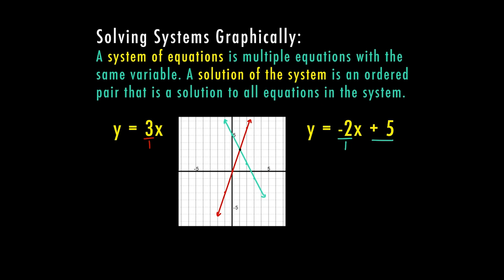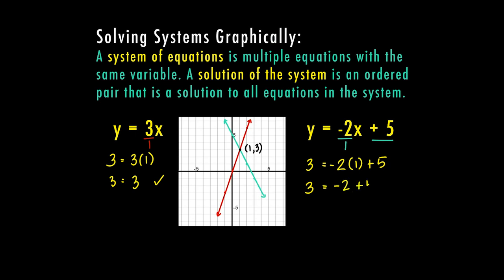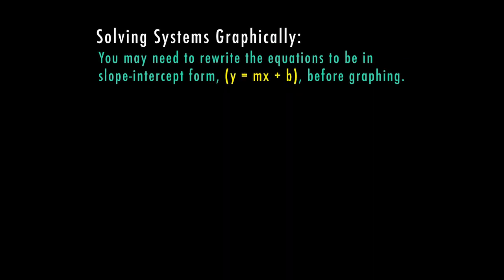Now that I have my line drawn, I can see that the point of intersection is right here at the point (1, 3). I need to check that this is a solution for both equations, so I'm going to go back to my original equations and plug in 1 for x and 3 for y. In the first equation: 3 equals 3 times 1, and 3 times 1 is 3 — that checks out. In the second equation: 3 equals negative 2 times 1 plus 5, and negative 2 plus 5 is also 3 — that also checks out. So (1, 3) is the solution to this system of equations.